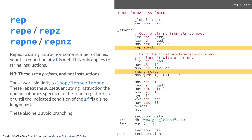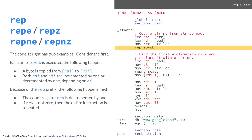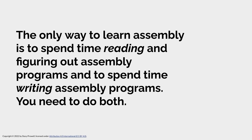Notice that this instruction runs however long it needs, as does the REP MOVSB. There's no direct branching in the code — it's just an instruction that does a lot of work, and that's great because it eliminates branching. The only way to learn assembly is to spend time reading and figuring it out, and then spend time writing assembly language to understand it better. You need to do both to get good with assembly.